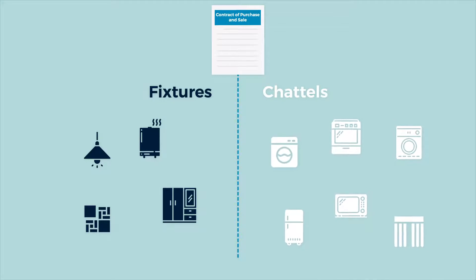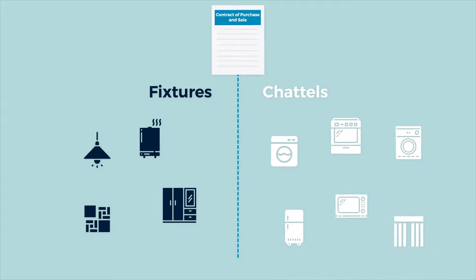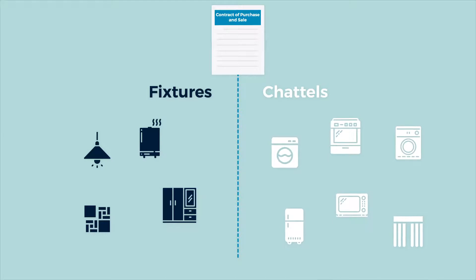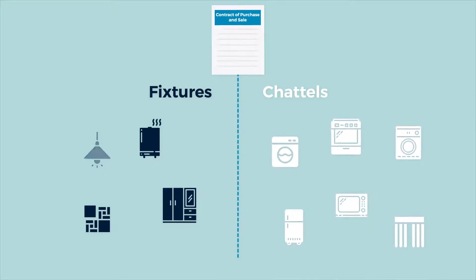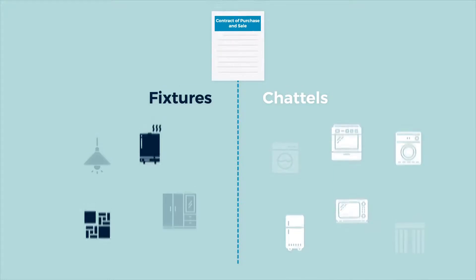For example, chattels may include fridges, stoves, microwaves, washers, dryers, or window coverings. The contract of purchase and sale should specify which of these items are included. If the buyer or the seller wants particular items to be included or excluded as part of the purchase and sale, it is important that they specifically list them in the contract.